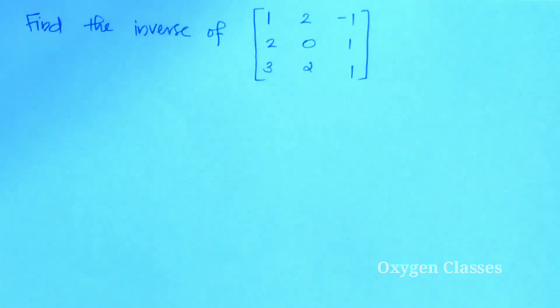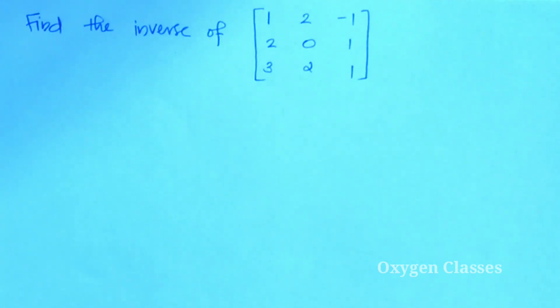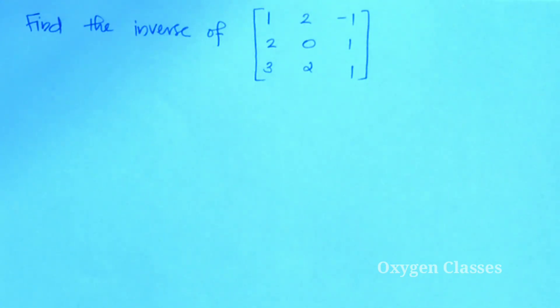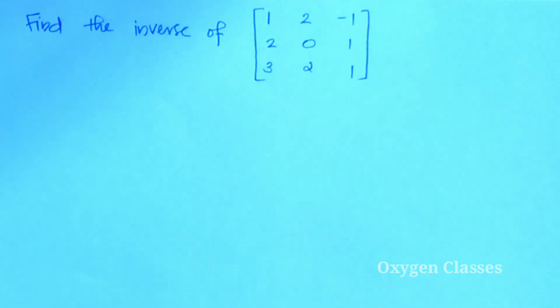First, find the inverse of the matrix: 1, 2, minus 1, 2, 0, 1, 3, 2, 1.